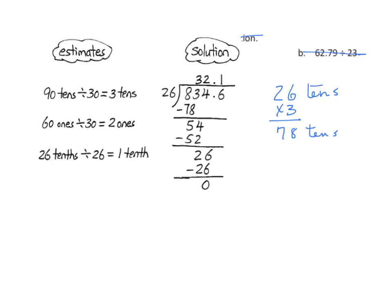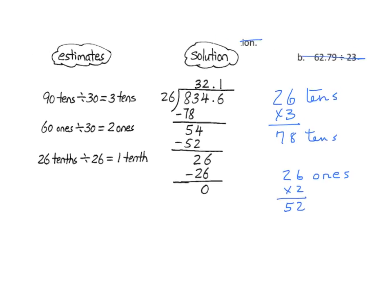So we're going to continue our problem. I'll have 26 — in this case it's 26 ones. We're going to multiply it by 2, and we get 52, which we have recorded under the dividend. We subtract that and we get a 2 — 2 ones.